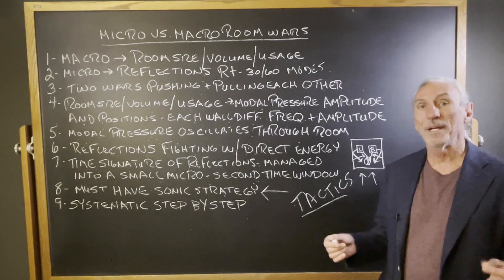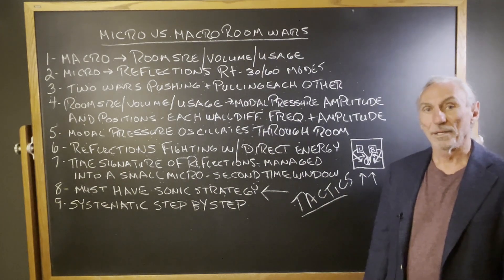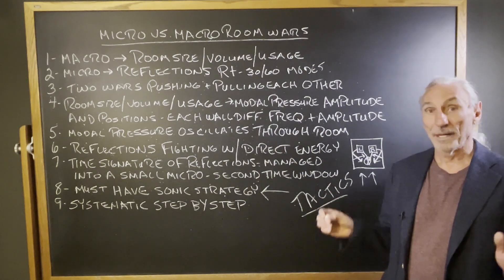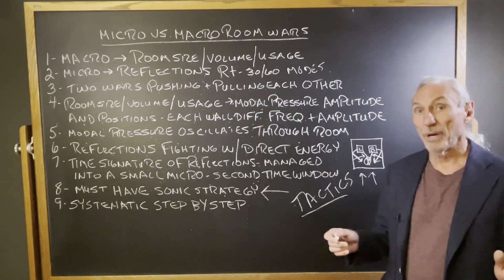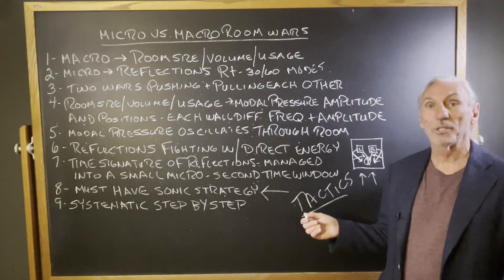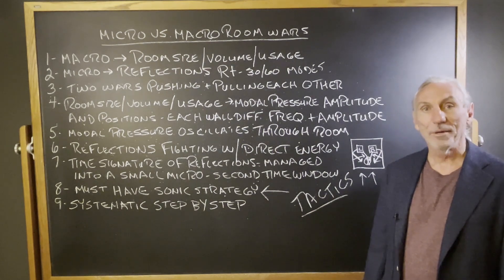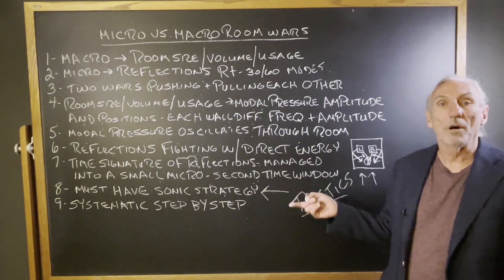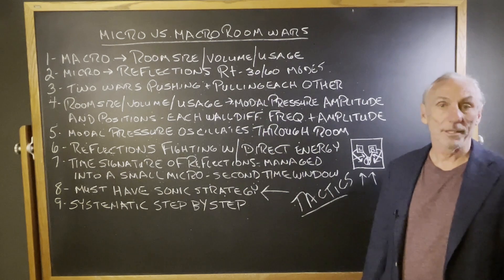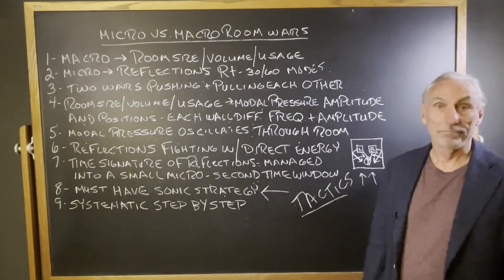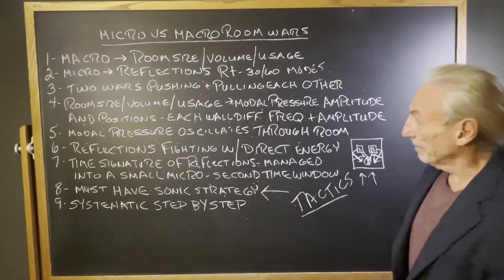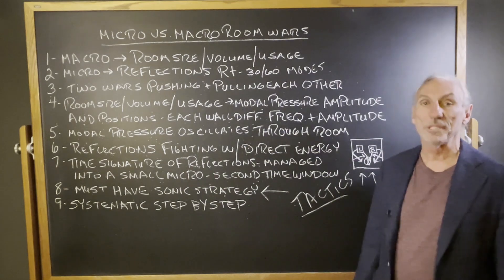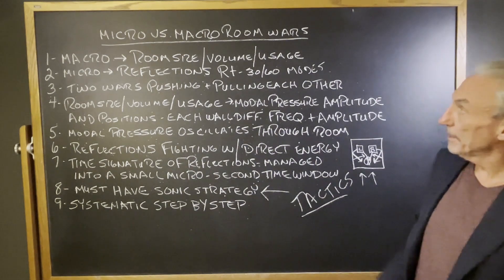I can't believe the money and time people waste. Everybody's looking for a quick solution and there isn't one — and companies know that, so they'll subscribe to that in their marketing strategy. A good example? Corner bass traps. The corners of the room are not your problem — it's the whole wall. How is treating the corner going to solve a whole wall problem? What percentage of the corner is the total wall? You've got to look at everything and have a step-by-step approach, because every step is based upon the step you took before. Skip steps, you'll pay for it in the end.